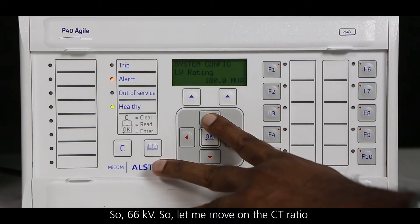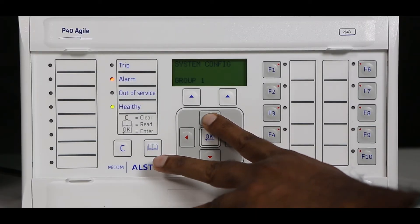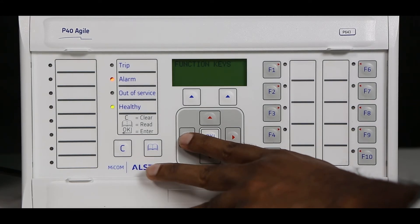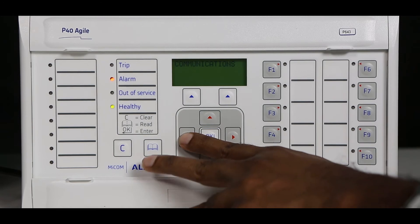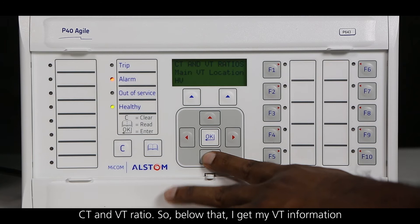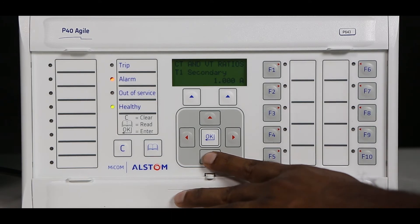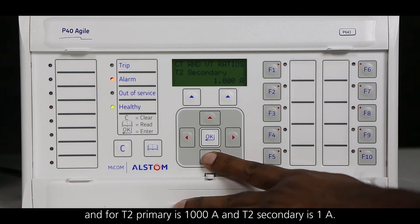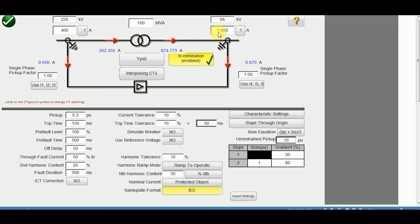Now let me move on to the CT ratio and VT ratio. Below that I get my CT information. CT T1 is 400 bar 1 amp, and T2 is 1000 bar 1 amp. My vector group is Yn, Yn 0 as seen earlier.